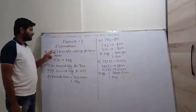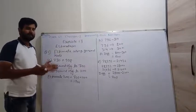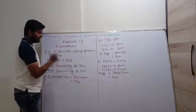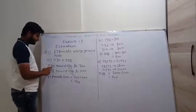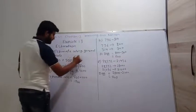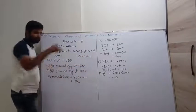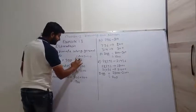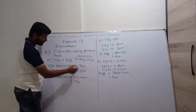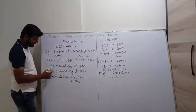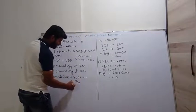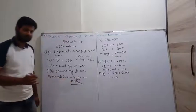Exercise 1.3 questions are totally based on the estimation we just learned. First question: estimate using the general rule. For 730 plus 998, first we round up. In hundreds estimation, 1 to 49 is treated as 0 (previous value) and 51 to 99 is treated as 100 (next value). So 730 rounds to 700, and 998 rounds to 1000. The estimated sum is 700 plus 1000, which gives 1700. This is the estimate value, not the exact value.